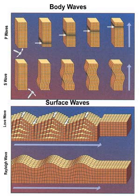Seismic surface waves travel along the Earth's surface and can be classified as a form of mechanical surface waves. They are called surface waves as they diminish as they get further from the surface. They travel more slowly than seismic body waves. In large earthquakes, surface waves can have an amplitude of several centimeters.